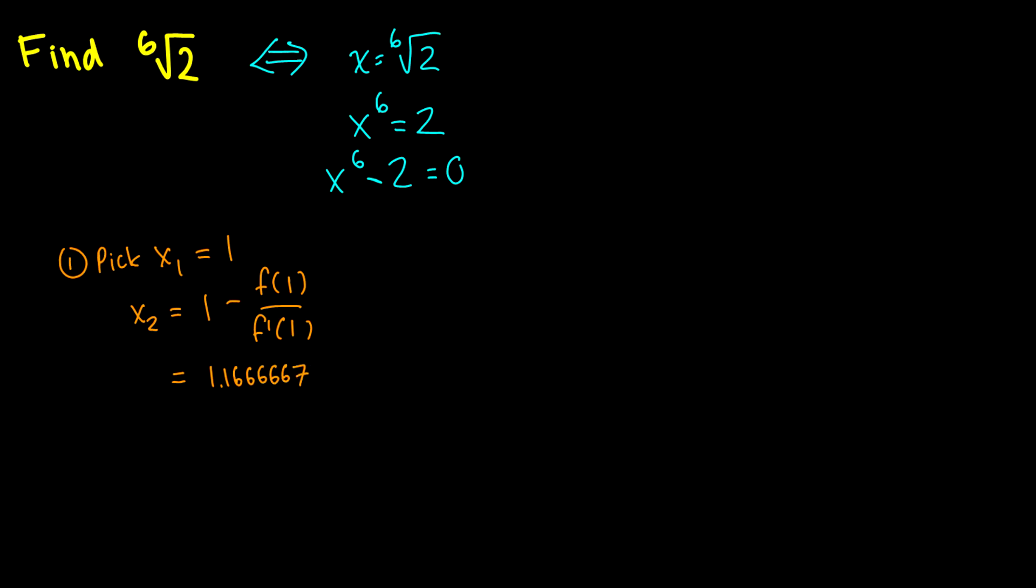So of course, how do you find f(x) and f'(x)? Well, our f(x) is going to be equal to x^6 - 2, just like it is here, and when we take its derivative, of course we're going to get 6x^5. So that is what that is.